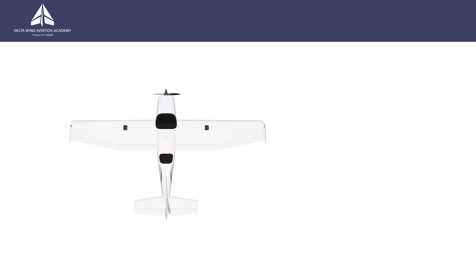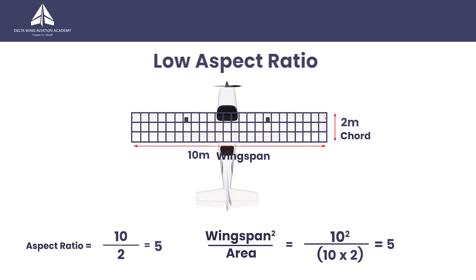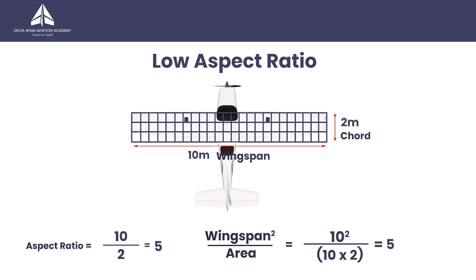You can also calculate the aspect ratio by this formula: the wingspan squared divided by the wing area. As you can see, the solution is also 5.